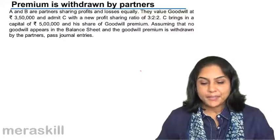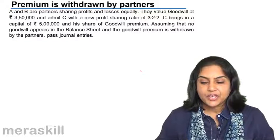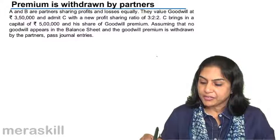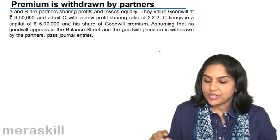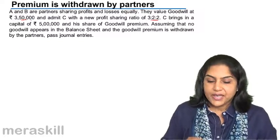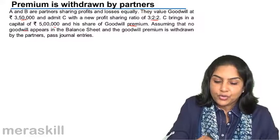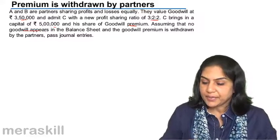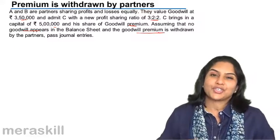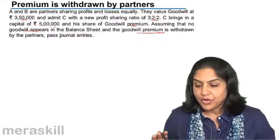A and B are partners sharing profits and losses equally. They value goodwill at 350,000 and admit C with a new profit sharing ratio of 3:2:2. C brings in capital of 5 lakh. His share of goodwill premium — assuming no goodwill appears in the balance sheet and the goodwill premium is withdrawn by the partners — requires journal entries.